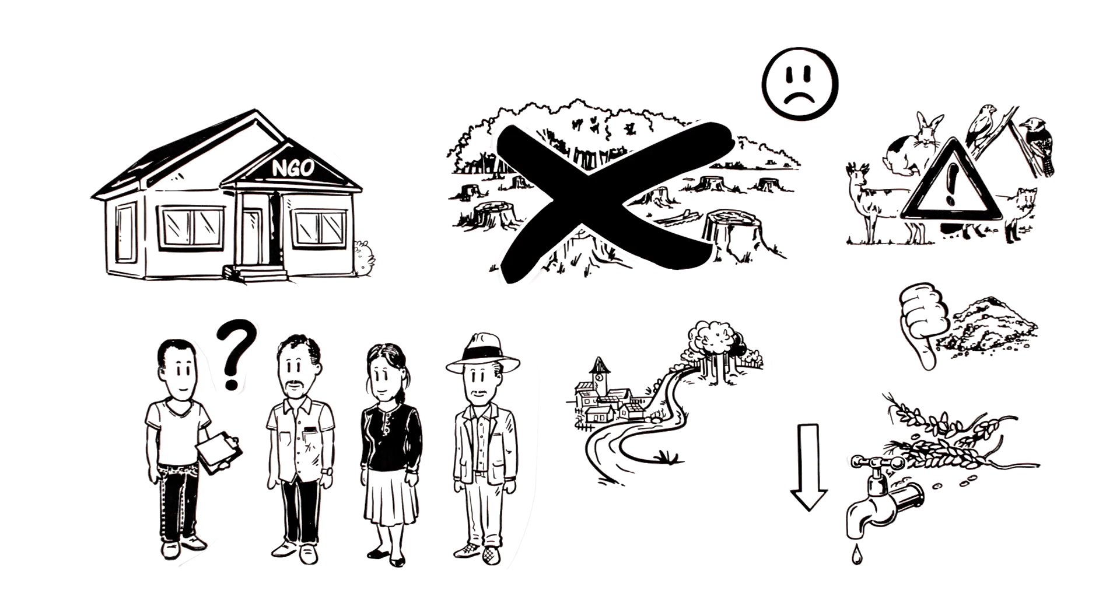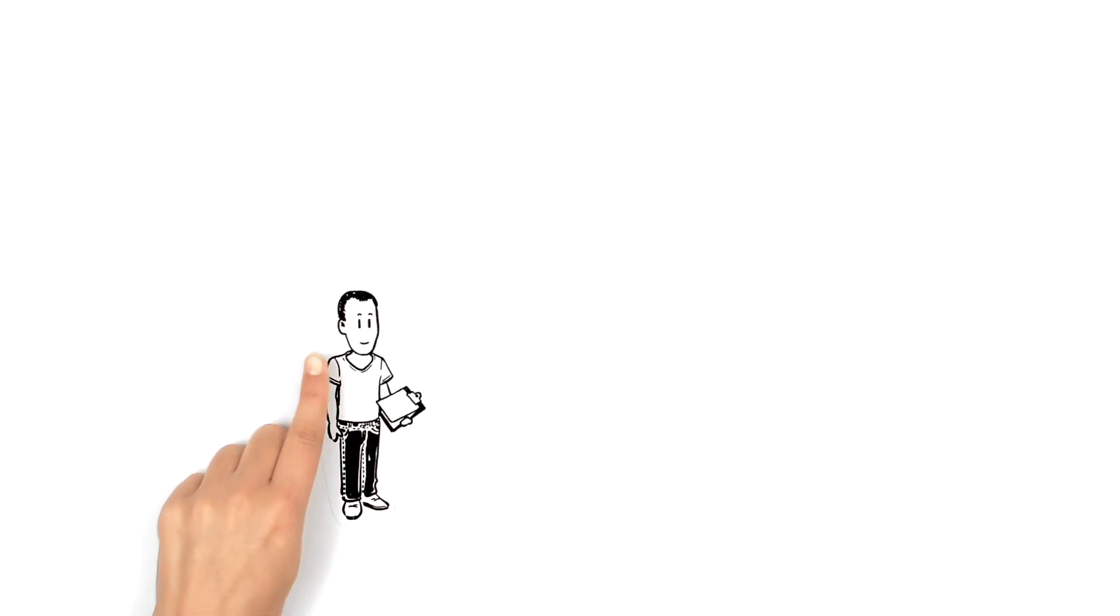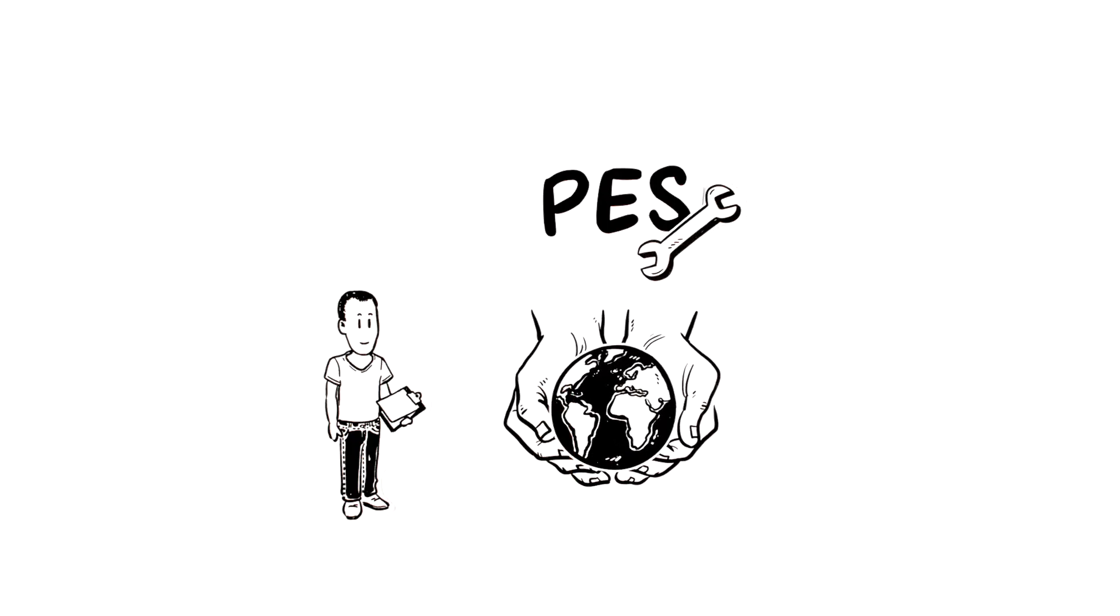What can Juan do to help prevent deforestation in this area? He hears about Payment for Ecosystem Services, or PES. PES is a tool that is used to help environmental conservation while preserving people's livelihoods. But how exactly does it work?